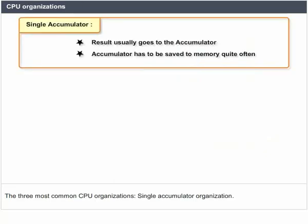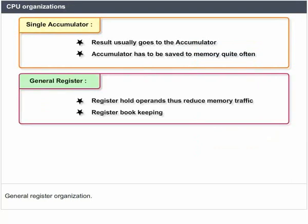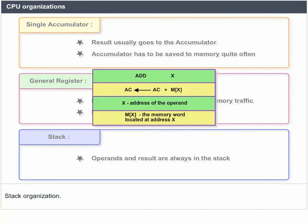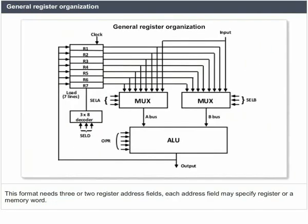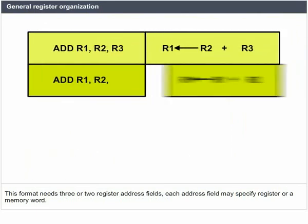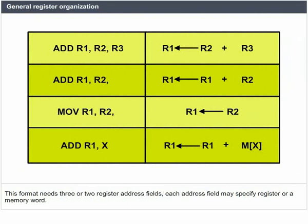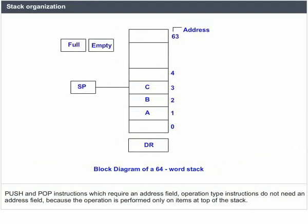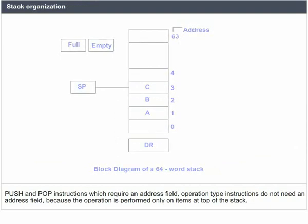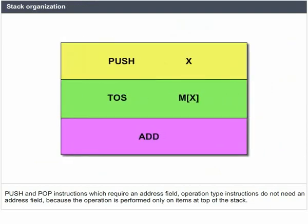CPU Organizations: The three most common CPU organizations are Single Accumulator Organization, General Register Organization, and Stack Organization. In Single Accumulator Organization, all operations are performed with an implied accumulator register and the instruction format uses one address field. In General Register Organization, the format needs three or two register address fields, where each address field may specify a register or a memory word. In Stack Organization, push and pop instructions require an address field, while operation-type instructions do not need an address field because the operation is performed only on items at the top of the stack.